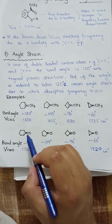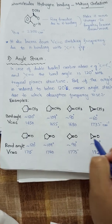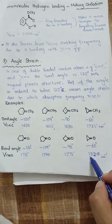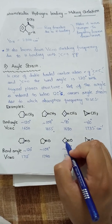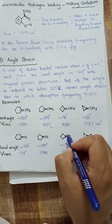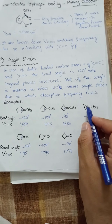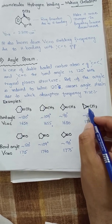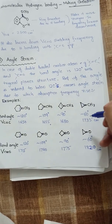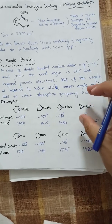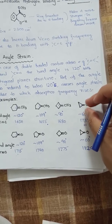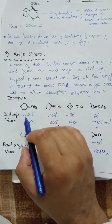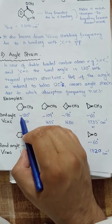Similarly, for the C=O carbonyl group, the absorption frequency increases from 1715 to 1740, then 1775, and finally 1820 cm⁻¹ as the ring size decreases and angle strain increases. This is due to the increase of s-character in the double bond. As the bond becomes more linear, the s-character increases, which increases the bond strength. When bond strength increases, the absorption frequency increases.